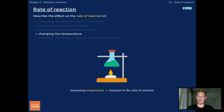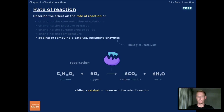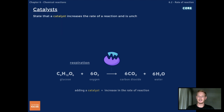Increasing the temperature of the reactants gives particles more kinetic energy, leading to an increase in the rate of reaction. Finally, using a catalyst, including enzymes which are biological catalysts, also increases the rate of reaction. A catalyst can be defined as a substance that increases the rate of a chemical reaction and is chemically unchanged at the end of the reaction.